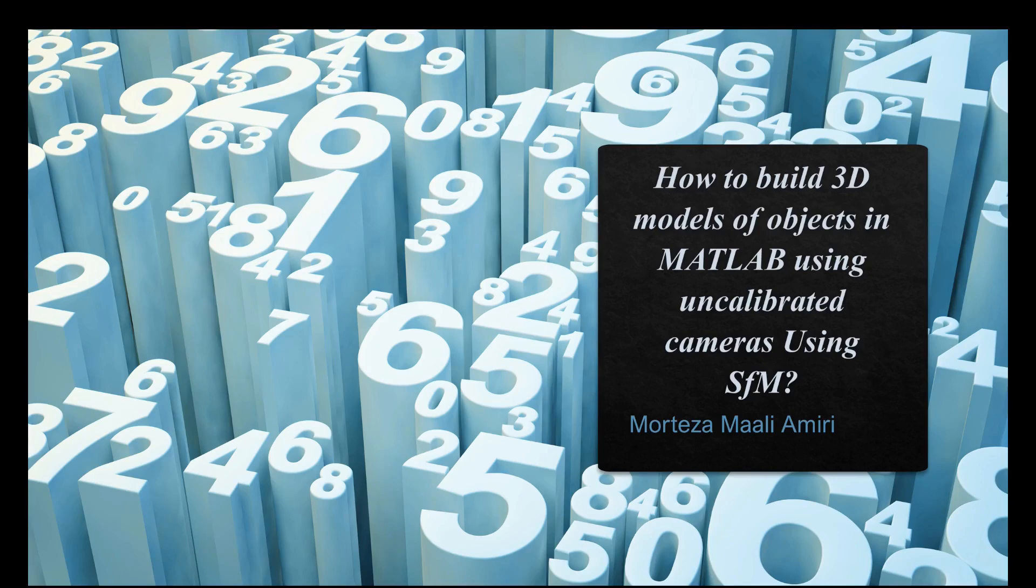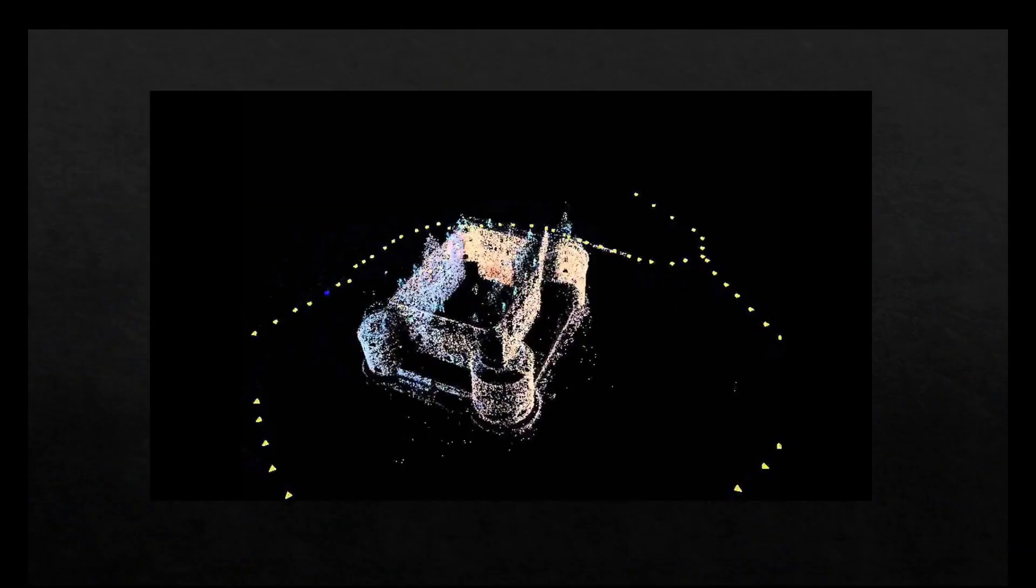As I said, in this video I want to talk about how to build 3D models of objects in MATLAB using uncalibrated cameras using SFM. There are so many ways to build a 3D model of objects. One of the best ways to do so is to use Structure from Motion or SFM.